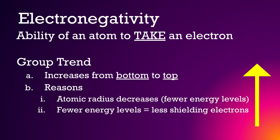Electronegativity is the ability of an atom to take an electron. The group trend is that it increases from bottom to top on the periodic table. The reason for this is the atomic radius decreases, so there are fewer energy levels. Fewer energy levels means less shielding of the electrons. Shielding means the electrons are not as subjected to the force of the nucleus — the positive charge of the nucleus.